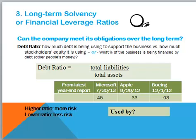The debt ratio is total liabilities divided by total assets. I calculated these ratios from the latest year-end reports. Microsoft has a debt ratio of 0.45. Apple had a debt ratio of 0.33, or 33%. That means that a third of Apple's assets were financed by debt, and about two-thirds were financed by equity. The higher the ratio, the more the risk. So Microsoft has a greater debt ratio and thus a little bit more risk than Apple.